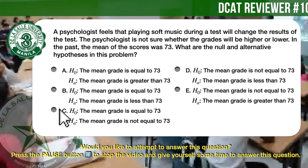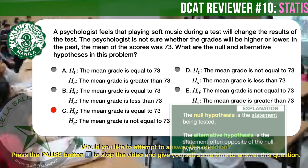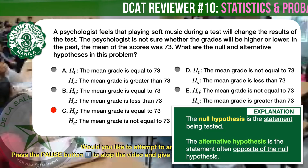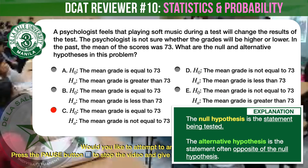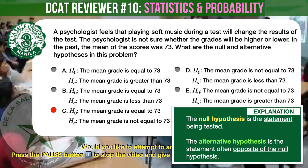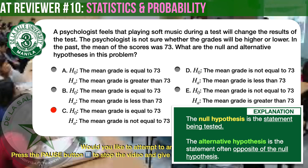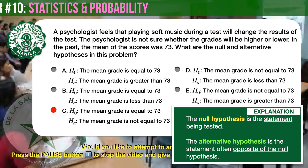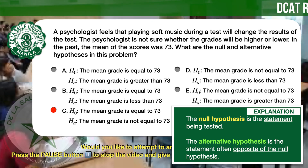The correct answer is C. The null hypothesis is the statement being tested; the alternative hypothesis is often the opposite of the null hypothesis. Therefore, the null hypothesis is that the mean score is equal to 73, and the alternative hypothesis is that the mean score is not equal to 73.